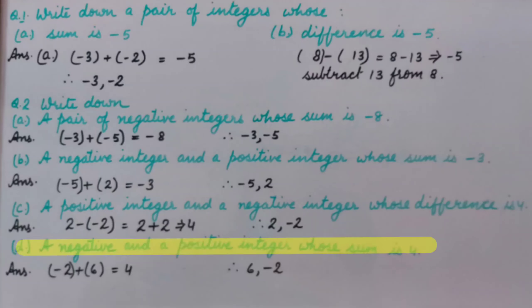D part, a negative and a positive integer whose sum is 4. It can be minus 2 as the negative integer, 6 as the positive integer, and their sum is 4. Thanks for watching.